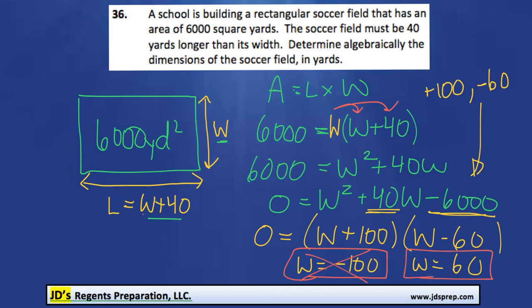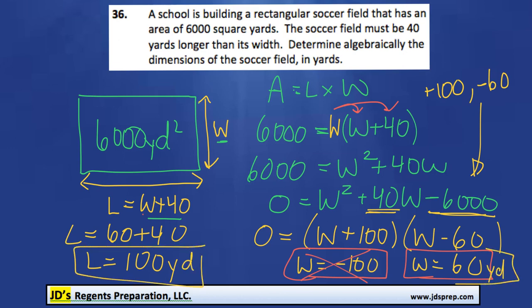So we have a width of 60. Now we also need to find out the length. Of course, the length is 40 more, so 60 plus 40 means that the length is 100. And we'll include our unit of measurement, yards. Length is 100 yards, and the width is 60 yards.